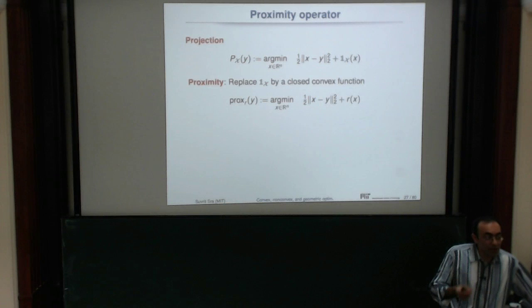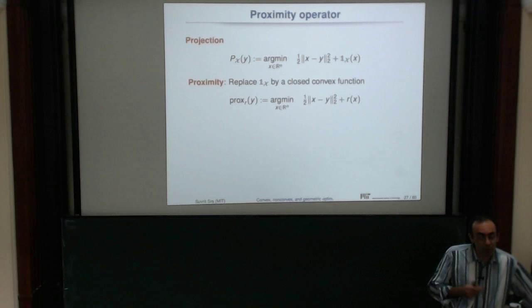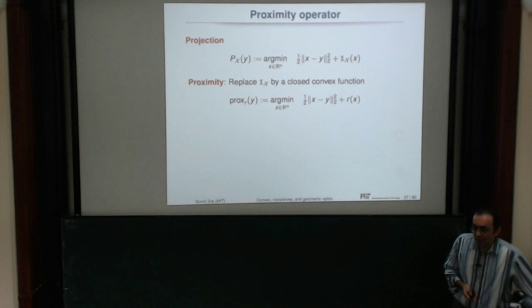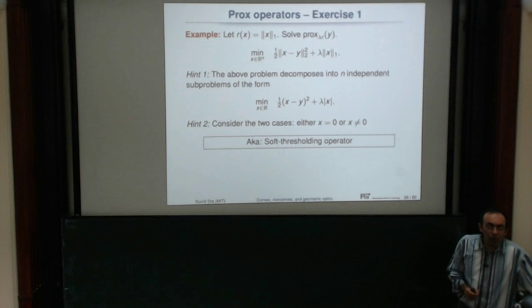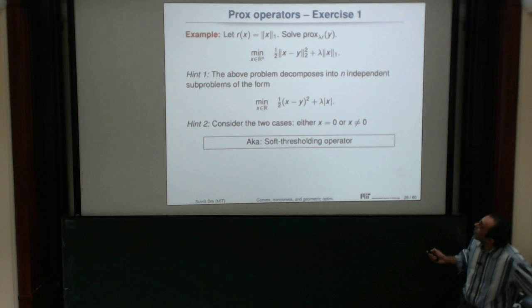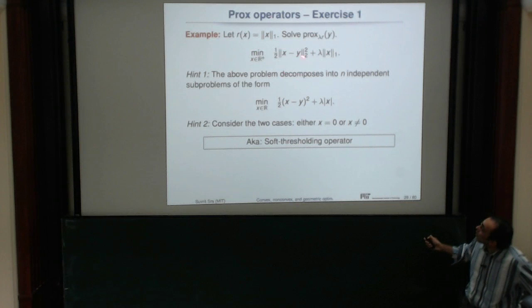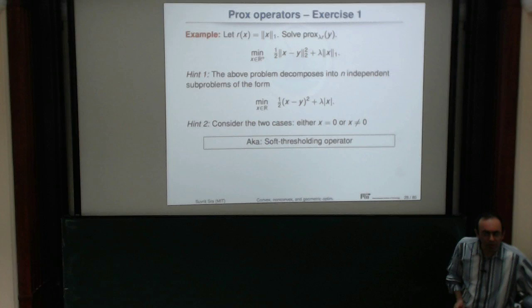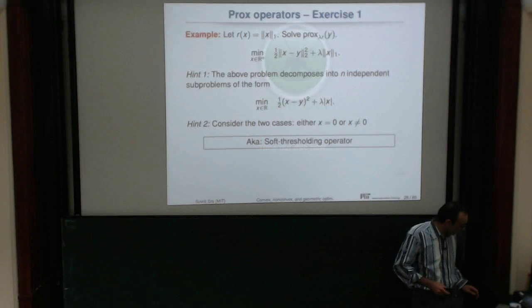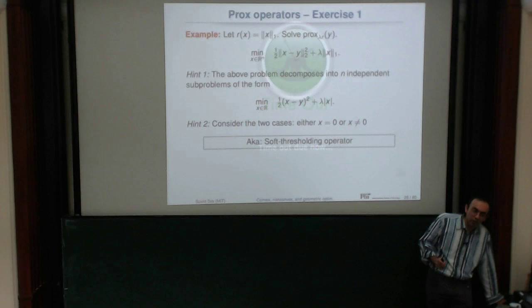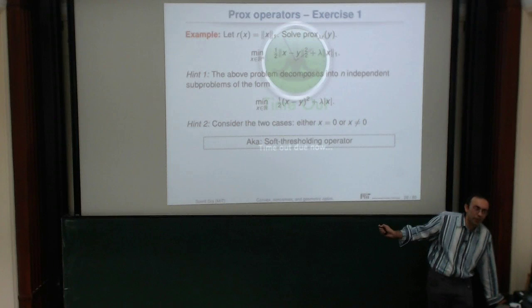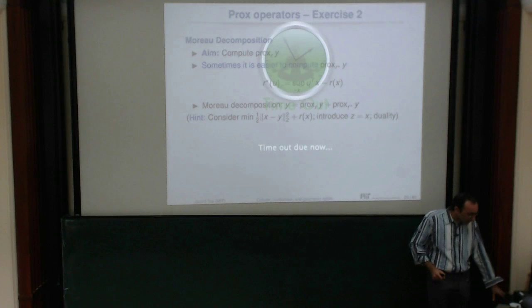The use of proximity operators was already being done by people in signal processing and in convex analysis by Rockafellar in the seventies. After Yuri Nesterov's paper showing that for f(x) + r(x) problems where the proximity operator is efficiently computable, you can actually avoid the worst-case behavior that the sub-gradient method suffers. That breakthrough result made this very popular in machine learning.